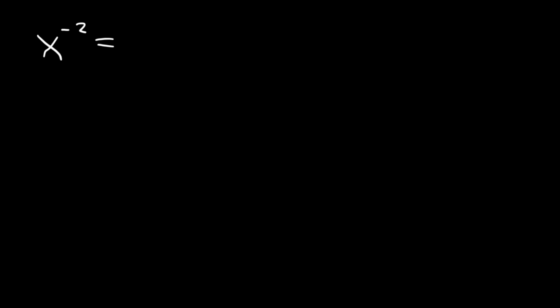Now, let's talk about negative exponents. What is x to the negative 2? How would you simplify that? How can you make the negative exponent positive? Typically, whenever you want to simplify the expression, you want to get rid of all negative exponents — you want to make sure all exponents are positive. All you need to do is change the position of x. If it's on the top, move it to the bottom. As you change the position, the sign is going to change — from negative 2 to positive 2.